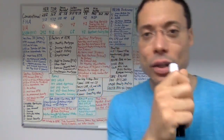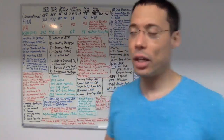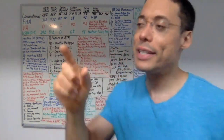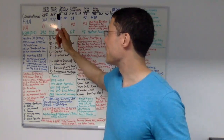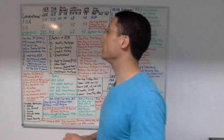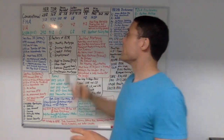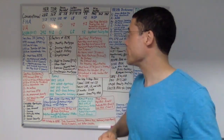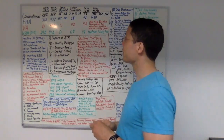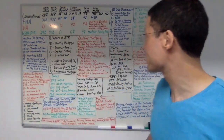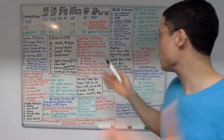Now let's talk about USDA loans, also called 502 loans. The maximum housing expense ratio for a USDA loan is 29%. The maximum total obligations ratio is 41%. There is no down payment requirement. The maximum seller concessions are 6%. The late fee is 4%. And as a side note, USDA loans have a one-time upfront funding fee.